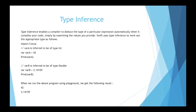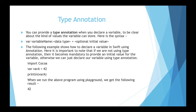Next is type annotation. Type annotation means when you declare a variable and also define its data type, you are giving it a type annotation. Note that if we are not using a type annotation, it becomes mandatory to provide an initial value for the variable. If you are declaring a variable without annotation, you must give it some value; otherwise you need to provide a type annotation.